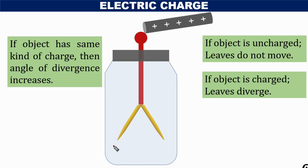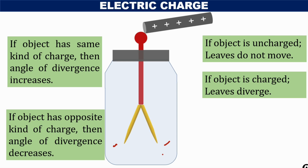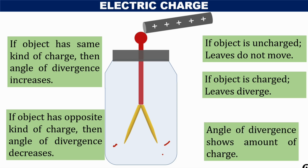On the other hand, if we bring a negatively charged object near a positively charged electroscope, the negative charge on the gold leaves decreases. If the charge on the leaves decreases, the angle of divergence will decrease. Hence we can conclude that if the object has the opposite kind of charge to that of the electroscope, the angle of divergence decreases. Using an uncharged electroscope, we can detect the presence of charge; using a charged electroscope, we can detect the type of charge. The calibrated gold leaf electroscope can also show the amount of charge on the given object.